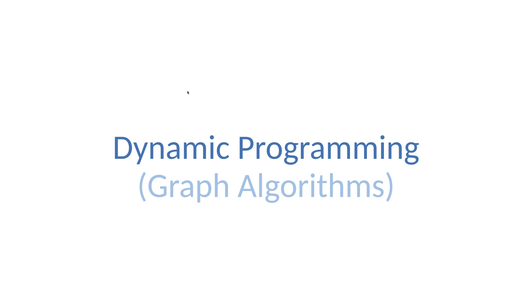In the previous lectures we have been talking about how to find the shortest path in a directed acyclic graph. In this lecture I would like to talk about the relationship between dynamic programming and directed acyclic graphs. If you know nothing about dynamic programming then feel free to skip this lecture. I also have a distinct course on dynamic programming, recursion and backtracking algorithms if you are interested.